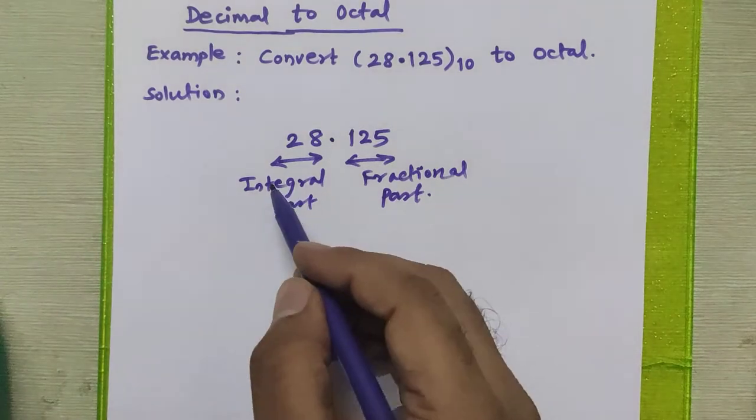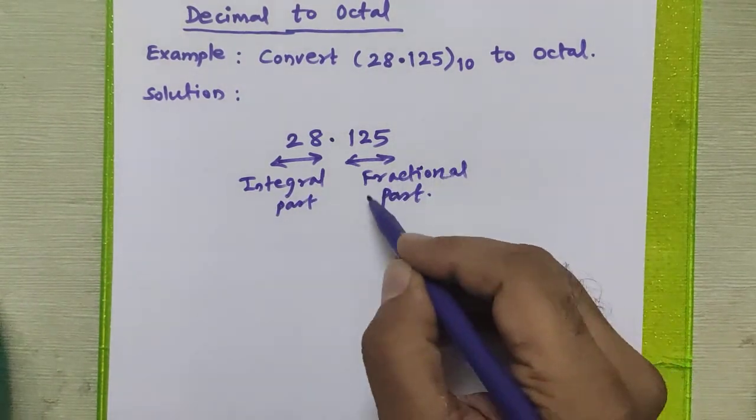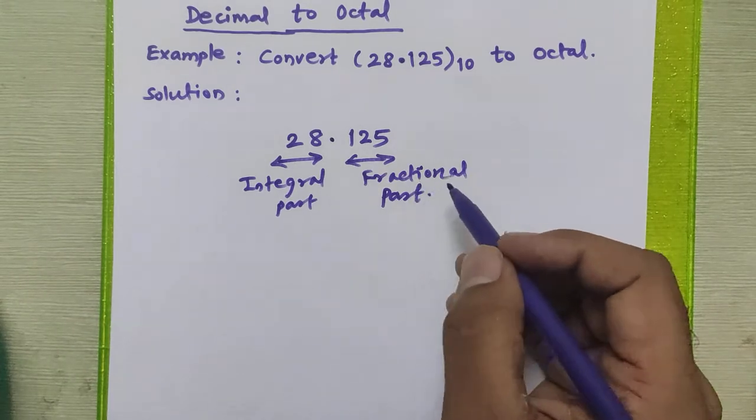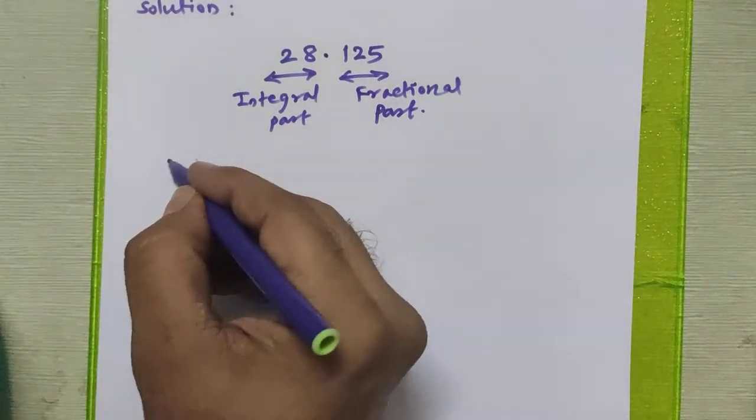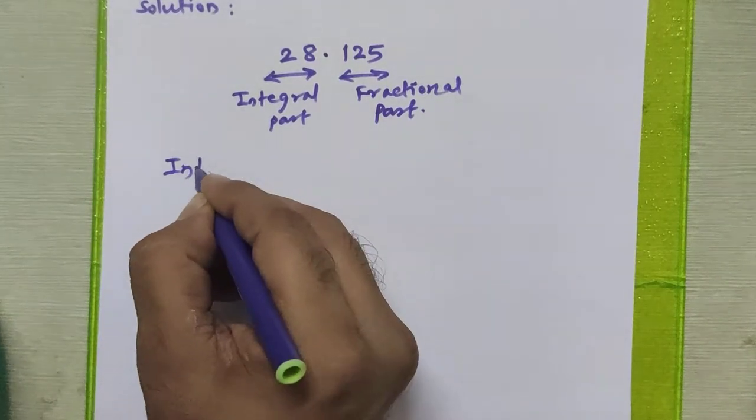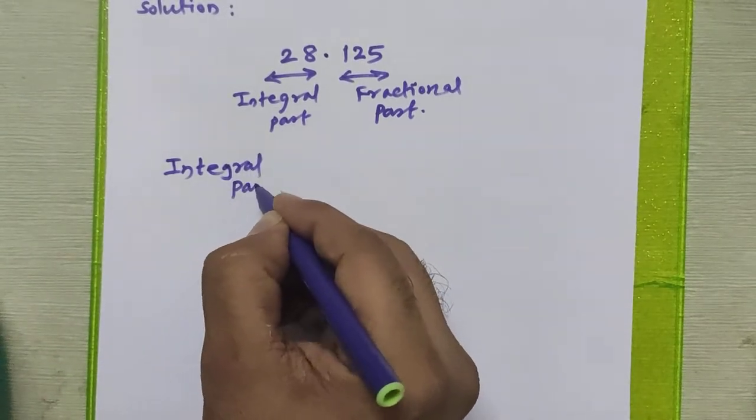We are going to apply a different procedure to convert the integral part to octal, whereas for the fractional part another procedure we are going to apply. So we will see the procedure how to convert the decimal to octal.